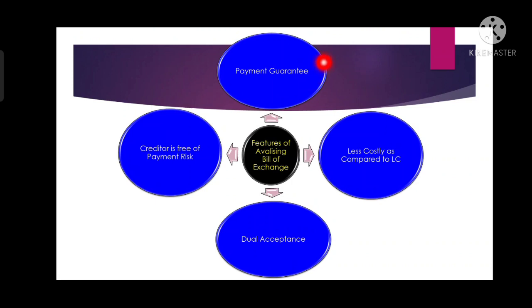The first feature is the payment guarantee — here the drawee bank provides a guarantee on behalf of the drawee to make the payment on the due date. The second feature is that it is less costly compared to a letter of credit. Under a letter of credit there are several types of charges: issuance charges, amendment charges, confirmation charges, retirement charges, and multiple other charges. But under the avalization process, there is only the avalization cost charge.